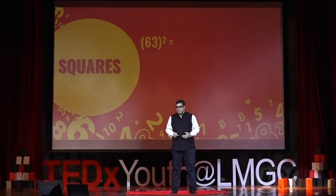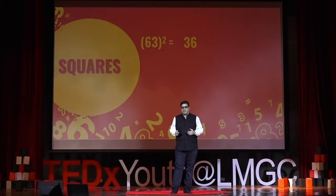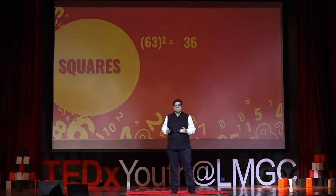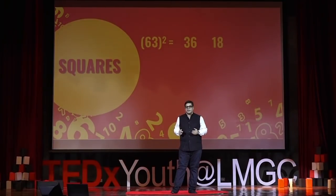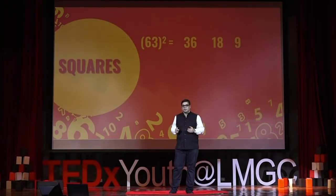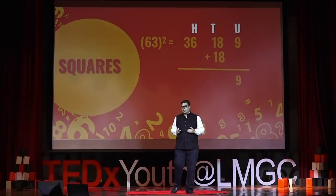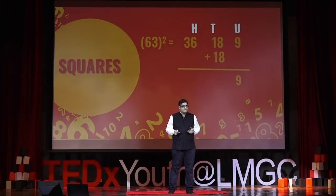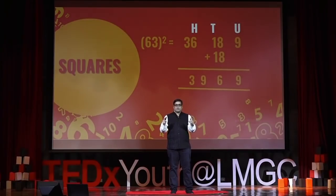Let's do one more: 63². a = 6, b = 3. 6² = 36. B/a = 3/6 = 1/2, so the next term is 18, and the last term is 9. Copy 18 down and add. Units: 9. Tens: 18 + 18 = 36, so 6 down, 3 carry. Hundreds: 36 + 3 = 39. The answer is 3969. The sutra we are using is the ratio B/a — proportionality.